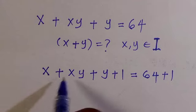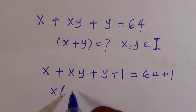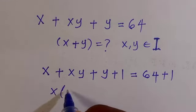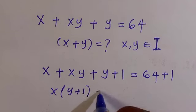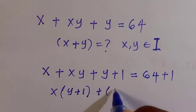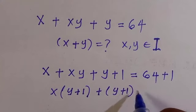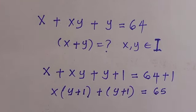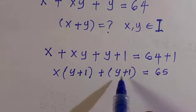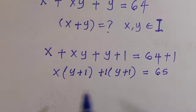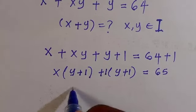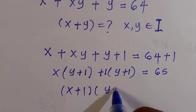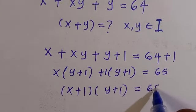When we take out x, we have x times (y plus 1), and here we also have another (y plus 1), which equals 65. Since y plus 1 is common, we take these together: (x plus 1)(y plus 1) equals 65.